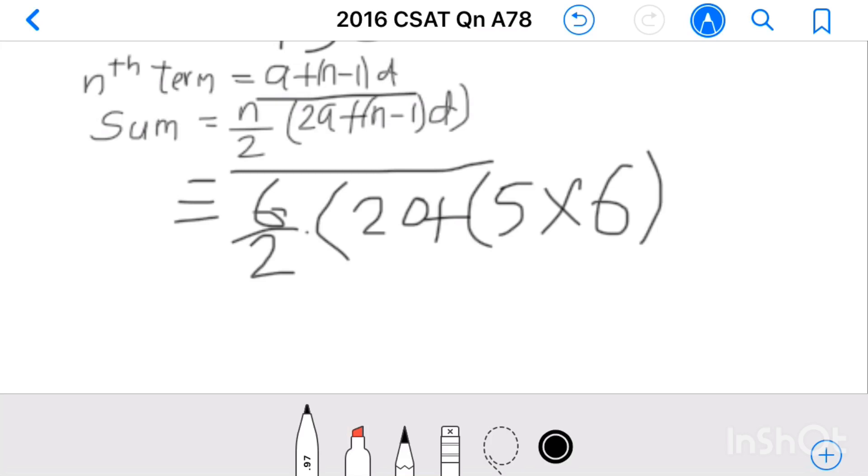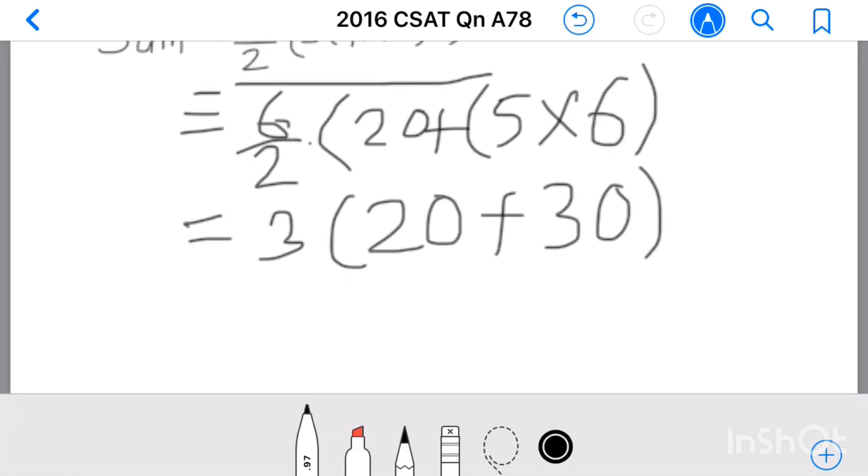After simplifying this, we get 6 by 2 equal to 3. 3 into 20 plus 5 into 6 equal to 30. 20 plus 30 equal to 50. 50 into 3, 150. Like this also we can find using equation.